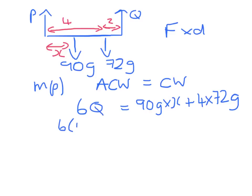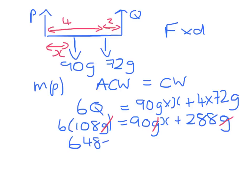From part 2, we can replace Q with 108g. And now we have an equation with one unknown x, and a g in every term, so I can cancel all of the g's. So 648 minus 288 has to equal 90x.